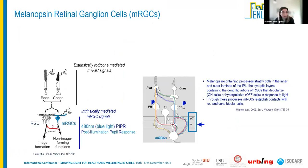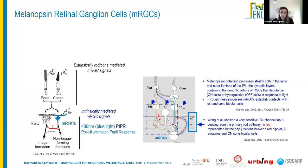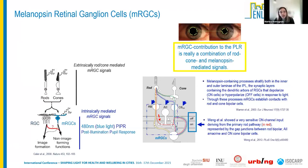In the pupillary light reflex, melanopsin sensitivity is translated into a sustained pupillary response called the post-illumination pupillary response (PIPR). Melanopsin-containing processes stratify in both inner and outer laminae of the inner plexiform layer, establishing contacts with rod and cone bipolar cells. Melanopsin RGCs are intrinsically photosensitive but can also fire through extrinsic rod and cone inputs. So the mRGC contribution to the pupillary light reflex is a combination of rod, cone, and melanopsin-mediated signals.